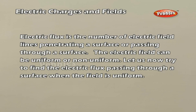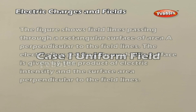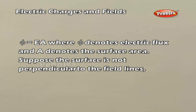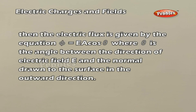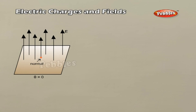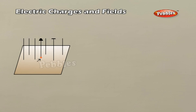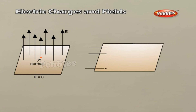Electric Flux. Electric flux is the number of electric field lines penetrating or passing through a surface. For a uniform field, the figure shows field lines passing through a rectangular surface of area A perpendicular to the field lines. The electric flux is given by the product of electric intensity and the surface area perpendicular to the field lines: phi = EA. If the surface is not perpendicular to the field lines, the electric flux is phi = EA cos theta, where theta is the angle between the electric field E and the outward normal to the surface. When the normal is parallel to the field (theta = 0), phi = EA. When the normal is perpendicular to the field, the electric flux becomes zero.